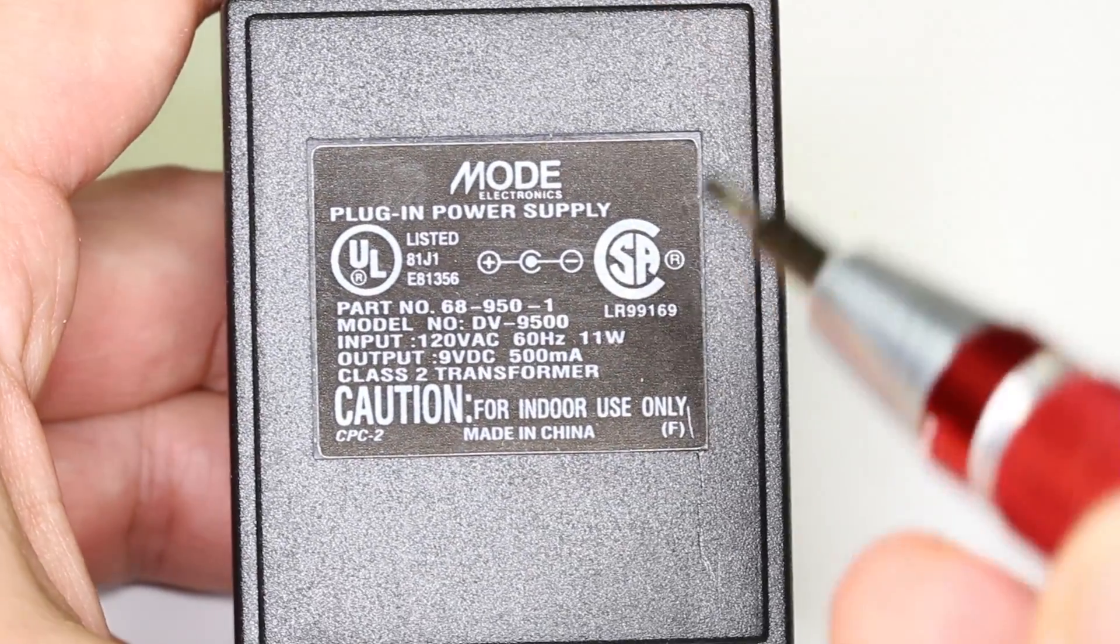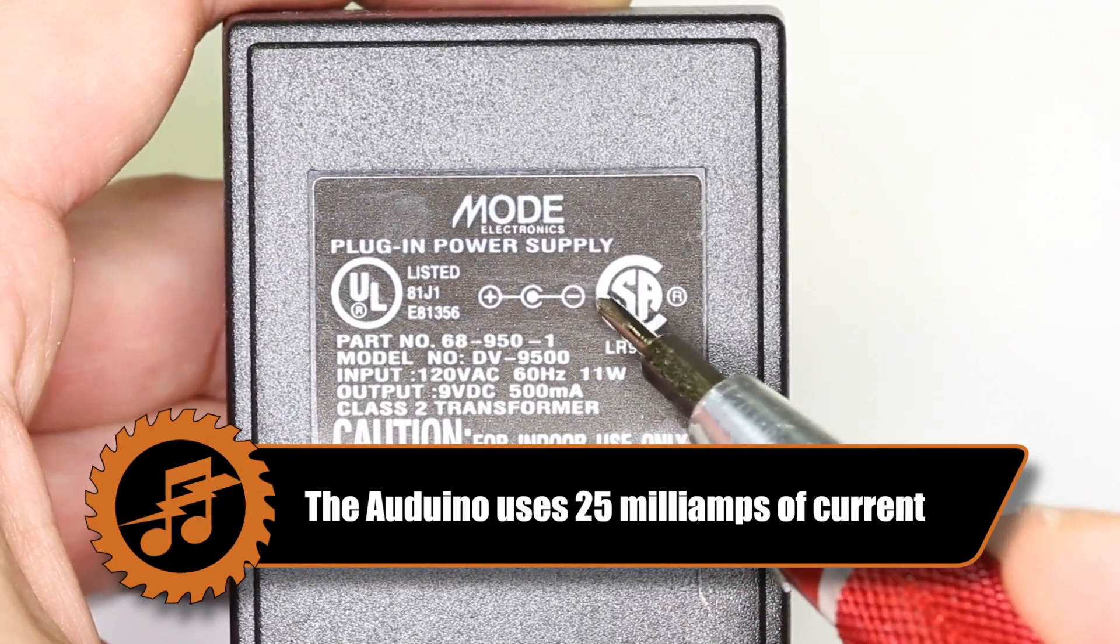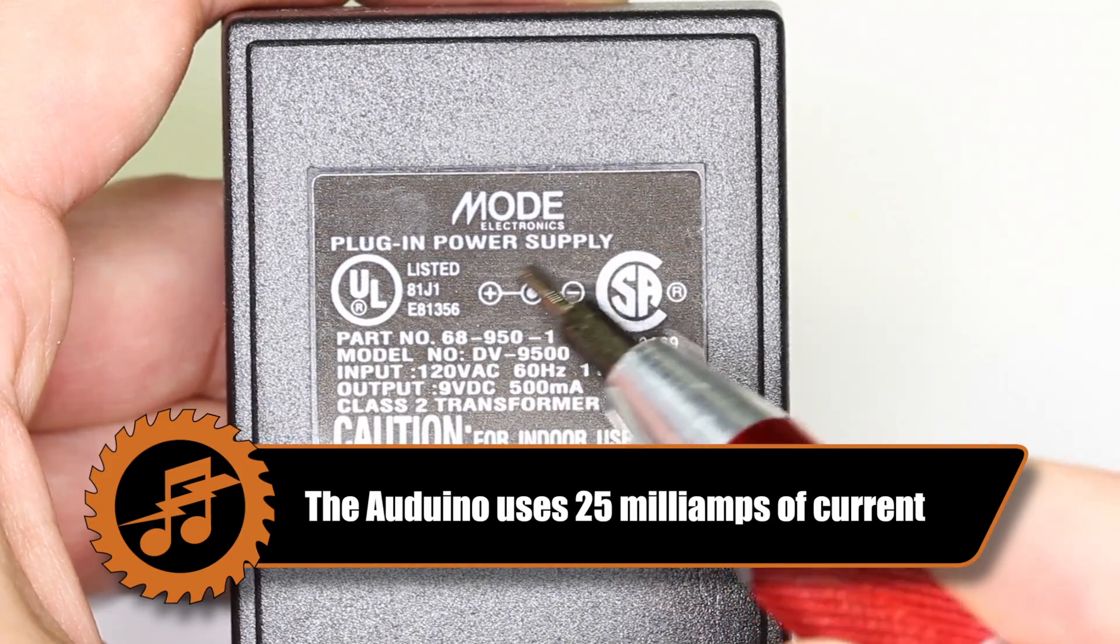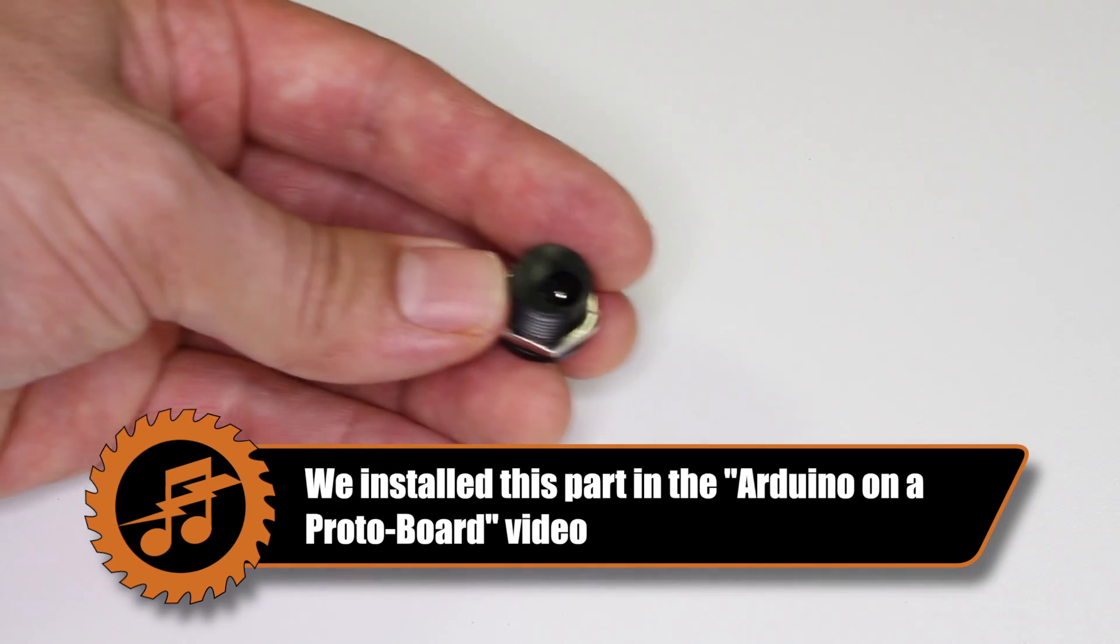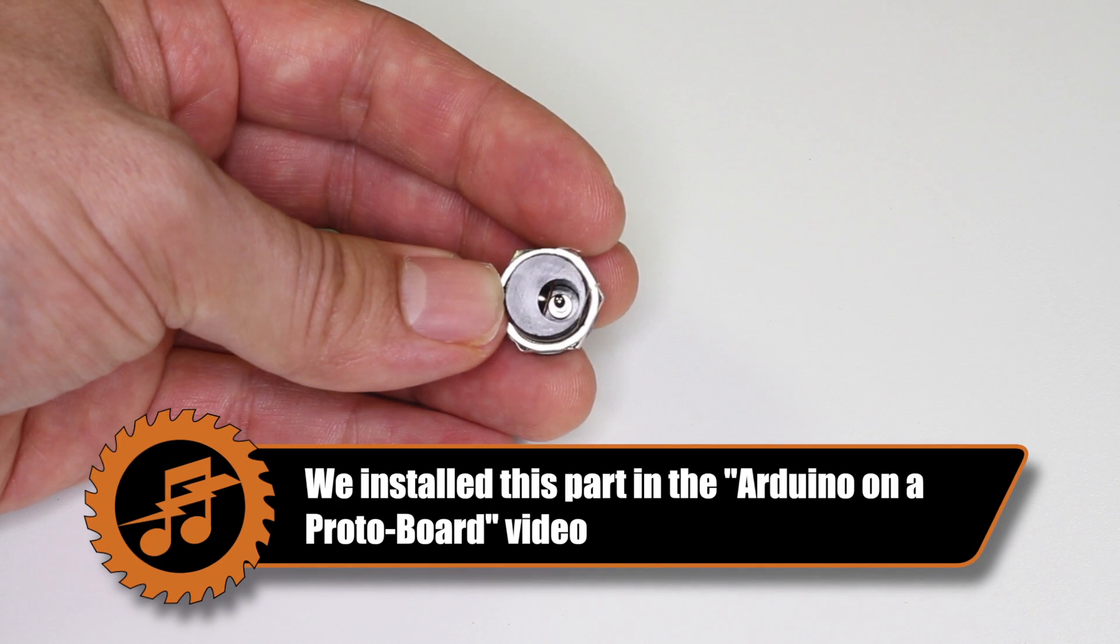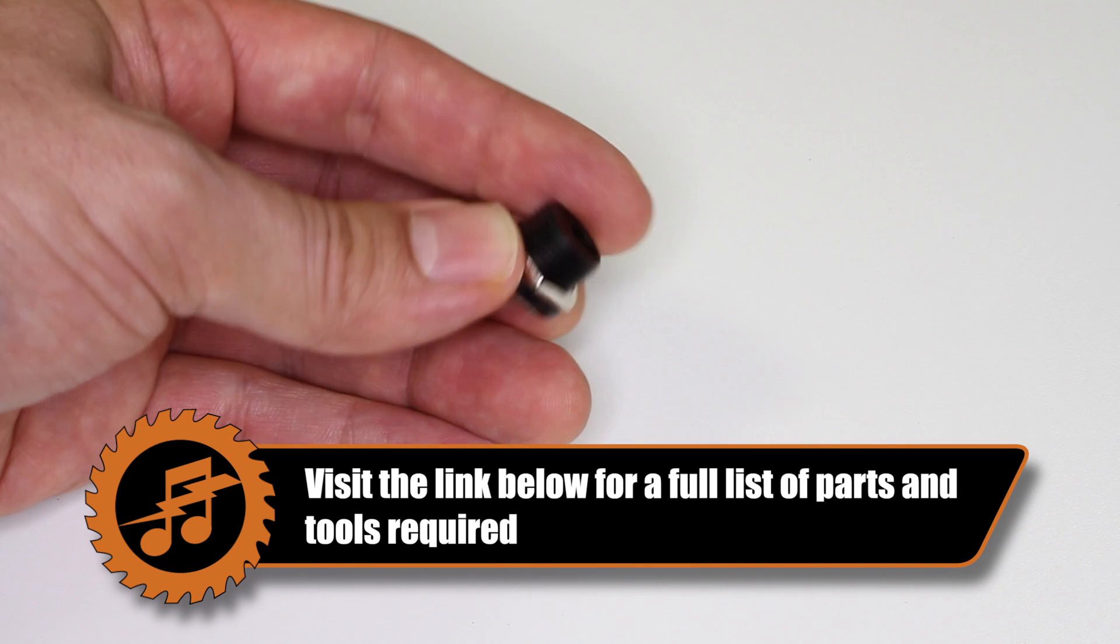You'll also need a 9-volt DC power supply. The Arduino circuit only uses 25 milliamps of current, so just make sure your supply is rated higher than that. Finally, you'll need a jack to fit your power adapter. Since we're using a metal enclosure, make sure your jack is fully insulated. In other words, the positive and negative wires should not be connected to the outer shield of the jack.